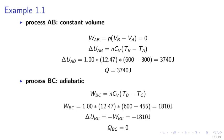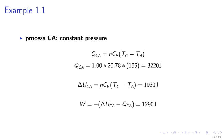Example 1.1. Process AB at constant volume: WAB equals P(VB minus VA) equals zero. Delta UAB equals NCV(TB minus TA). Delta UAB equals number of moles, which is 1.0, times CV, which is 12.47, times 600 minus 300 Kelvin. It gives us 3740 joules.